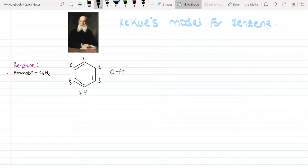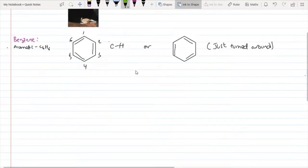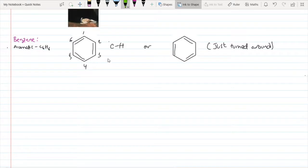Because this is a hexagon, no matter which way you turn it around, the shape is symmetrical. This is Kekulé's model right over here, and there are actually some problems with this model.